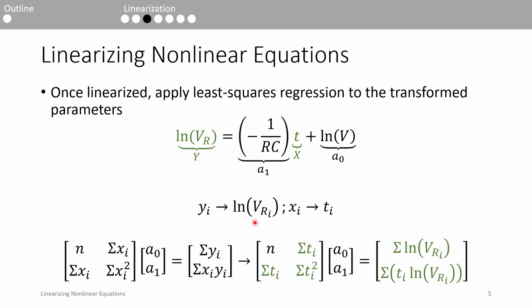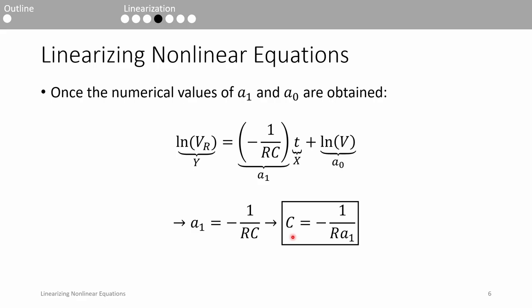Therefore, we just substitute ln of VR for all the Y points and T for all the X points, and then we solve the linear system of equations as normal. When we solve the linear system of equations, we will get the slope and intercept, A1 and A0, respectively. We just linearized the equation and saw that A1 equals negative 1 over RC, so we can easily obtain the value of C once we have the numerical value of A1.